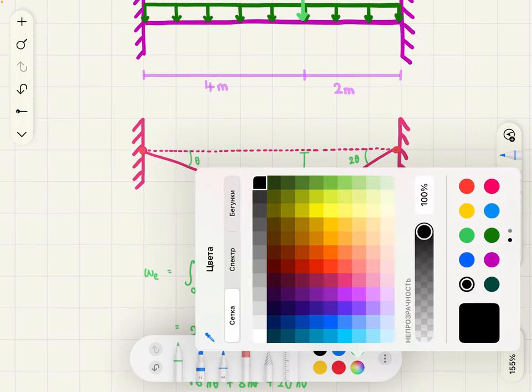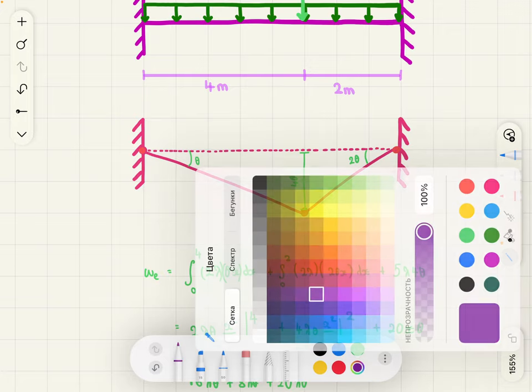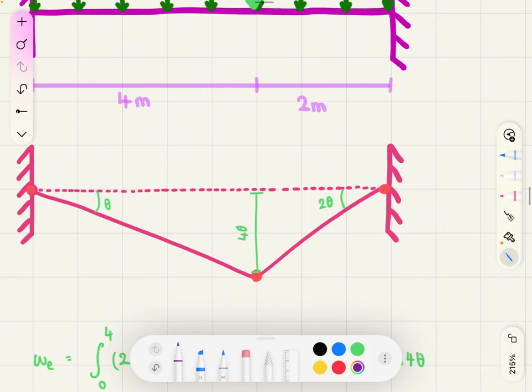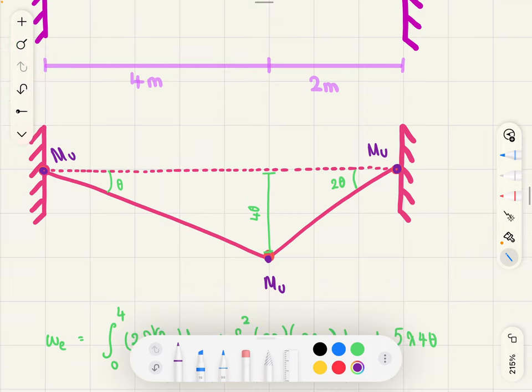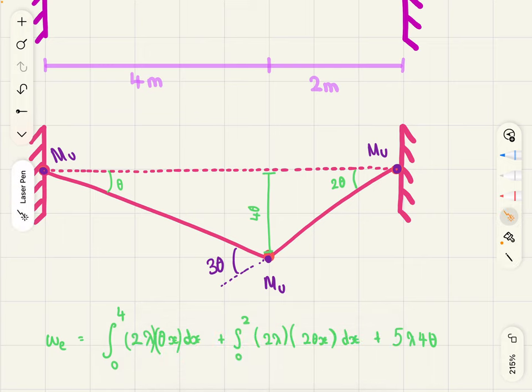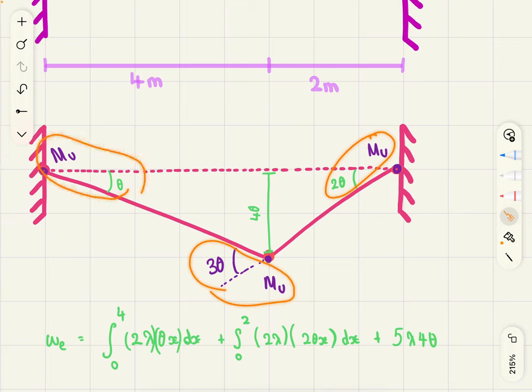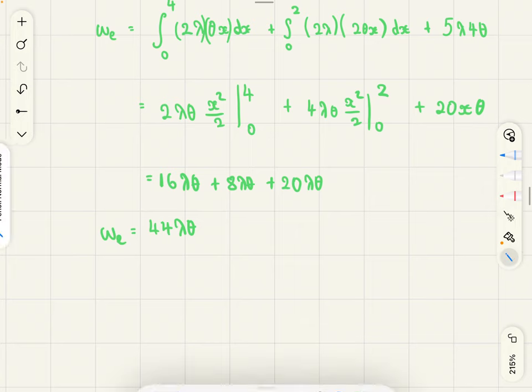Now for the internal work. We know we have three plastic hinges and that the maximum moment contribution for the plastic hinges is mu. So at this plastic hinge moment mu, at this plastic hinge moment mu and this plastic hinge moment mu. One more thing, we need to find the external angle, which is going to be the sum of the two internal angles. So 3θ. And to find the internal work, we do 2 muθ plus 3 muθ plus muθ. So we are going to have 6 muθ for the value of our internal work.